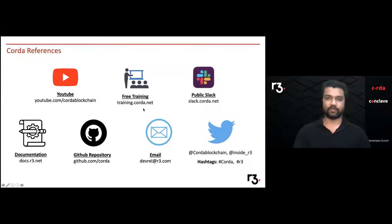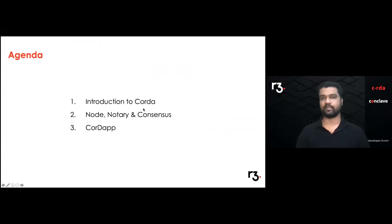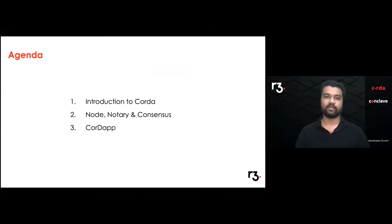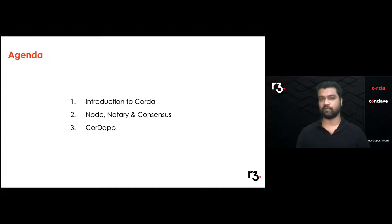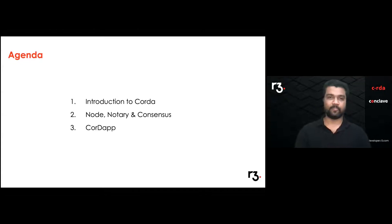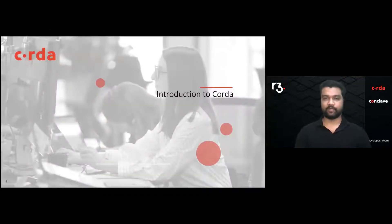Let's have a look at the broader agenda for today. We're going to introduce Corda — talk about why it was built and what problem we are trying to solve. We'll cover different components like the nodes, the notary, and how consensus happens. Finally, we'll talk about how applications are developed — the different components you need to build and how they work together.